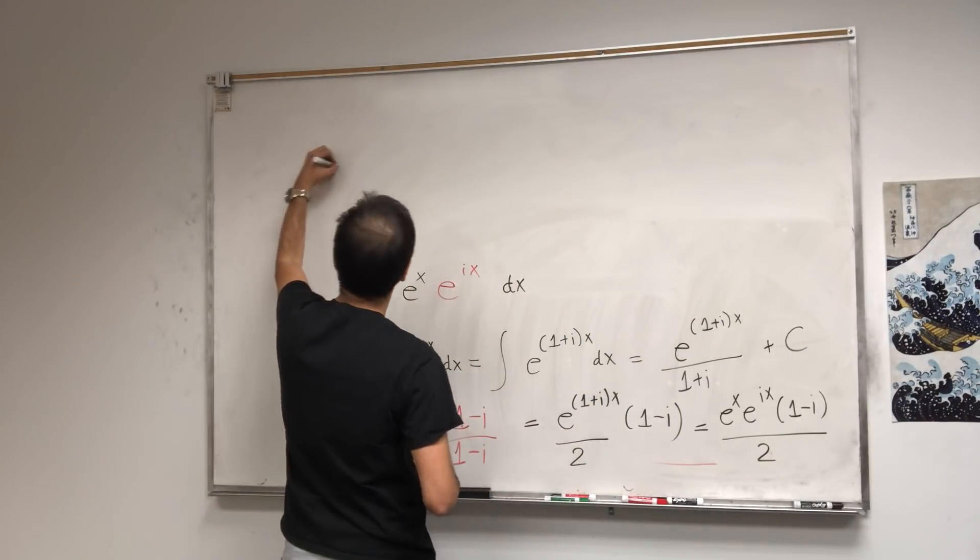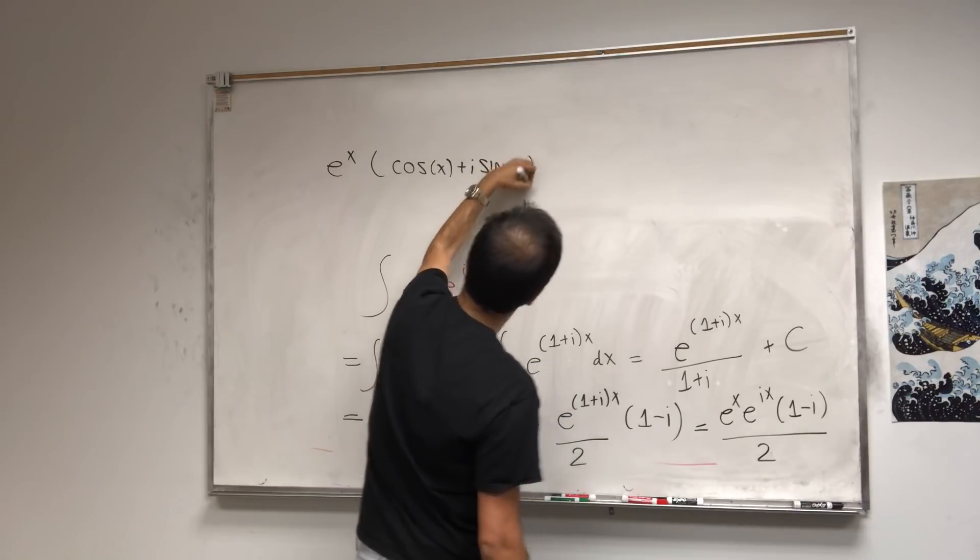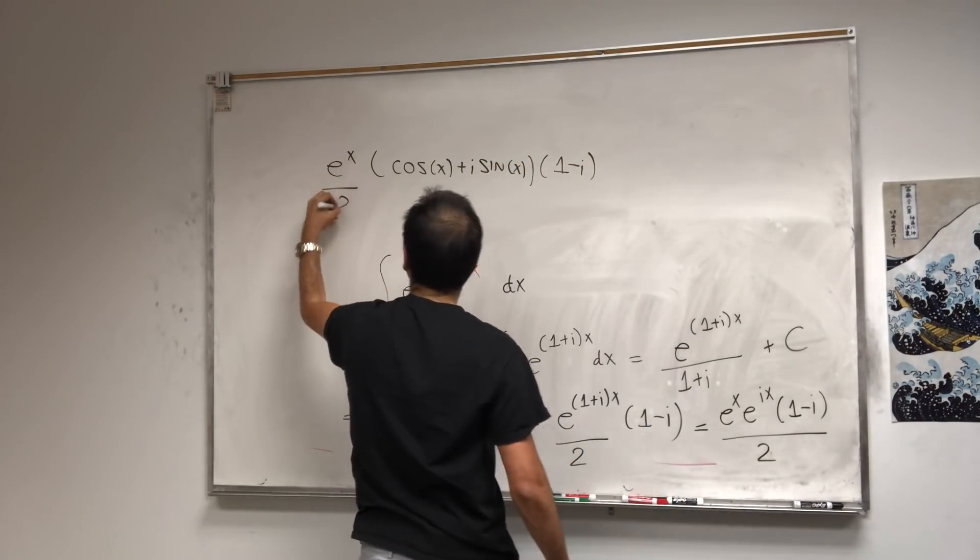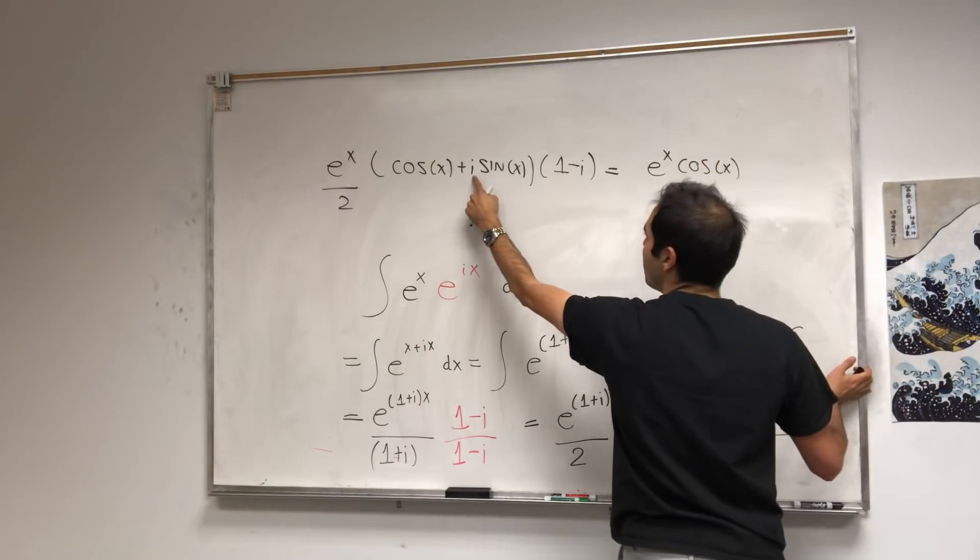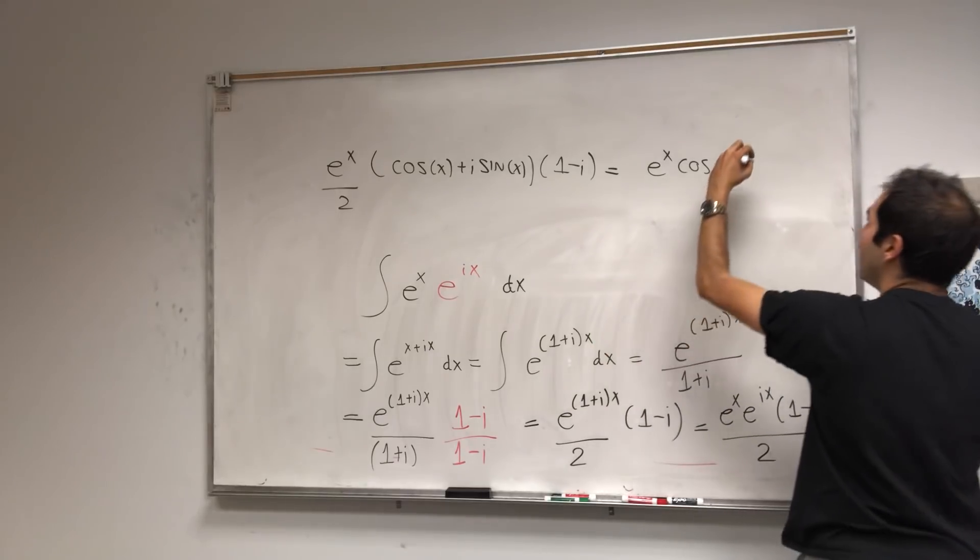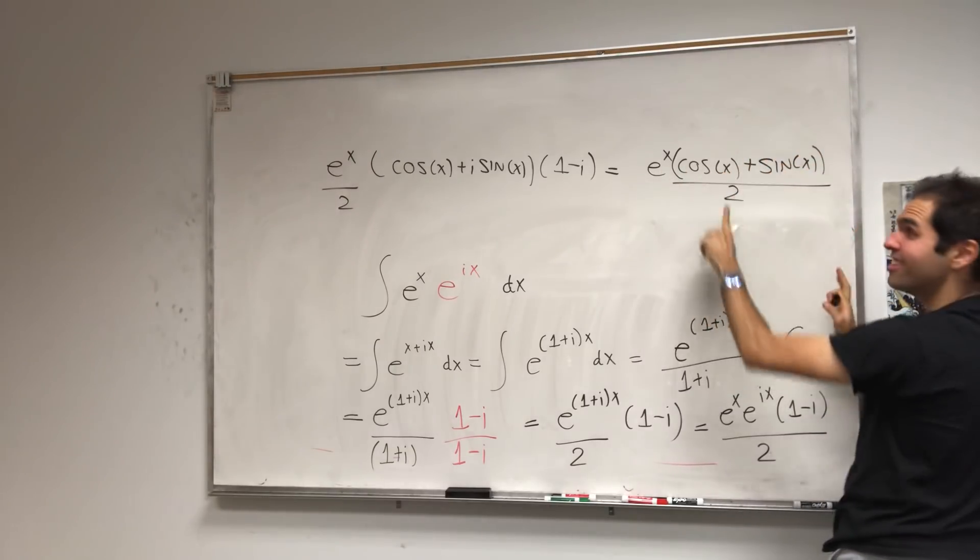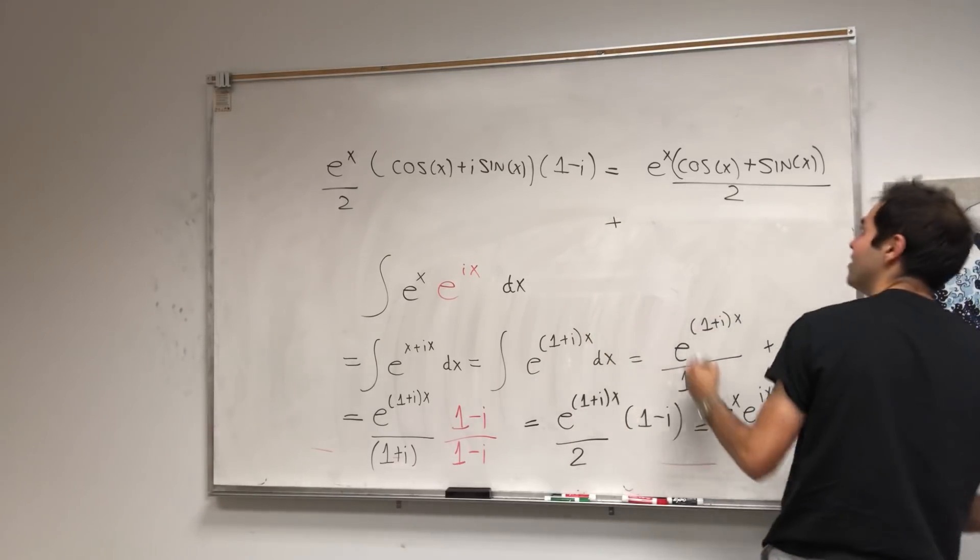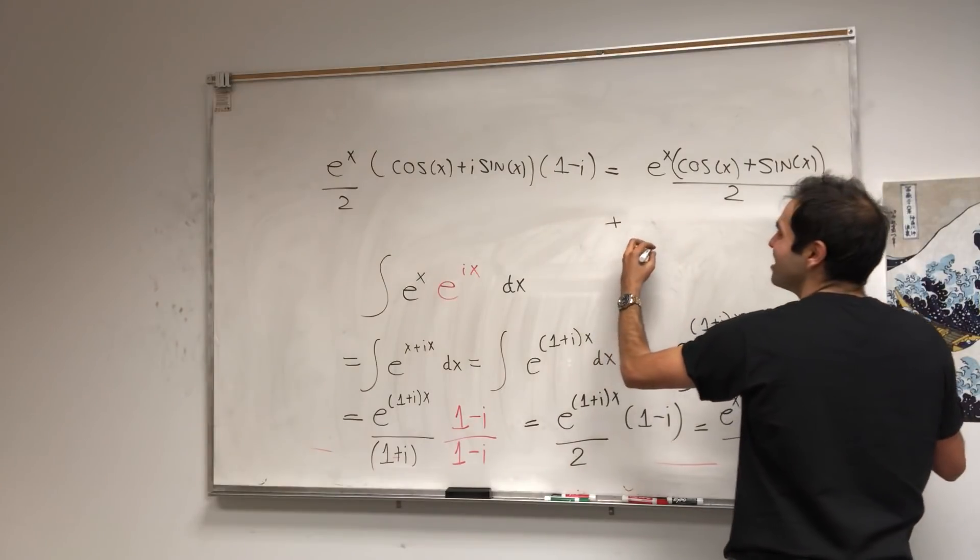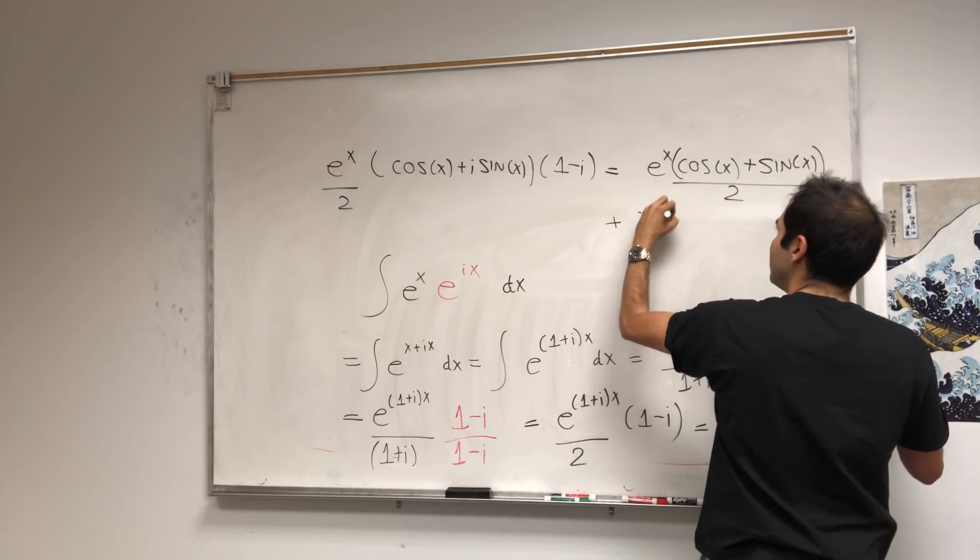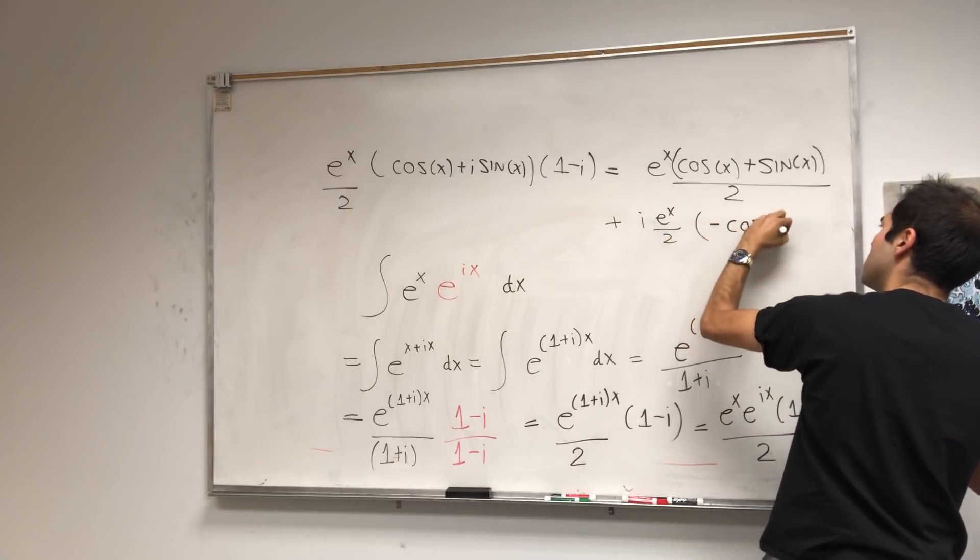And then you just got to evaluate this. So this becomes e^x e^(ix) (1-i) over two. And remember, what is e^(ix)? It's cos(x) + i sin(x) times (1-i). And again, all this divided by two. And then you just fall out, so e^x cos(x). So i times i, which is minus one, so plus one, cos(x) if you want, plus sin(x) divided by two. And then plus i, I get e^x over two, and the cross terms. So minus cos(x) plus sin(x).